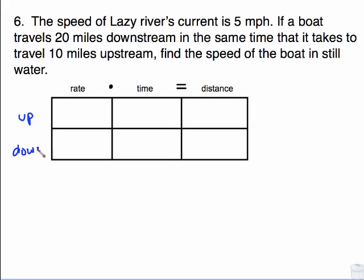So it's not like a plane and a car like the last one. This is upstream and downstream. We can still fill in these numbers. If a boat travels 20 miles downstream, that's the distance for down. In the same time it takes to travel 10 miles upstream, that's the distance for up. Find the speed of the boat in still water. So I'm going to let x equal the speed of the boat in still water. So x is the speed of the boat.